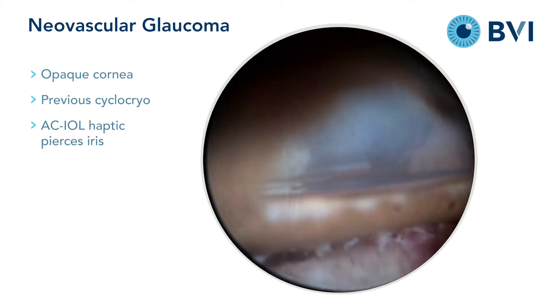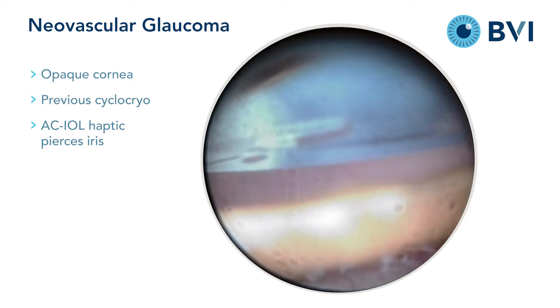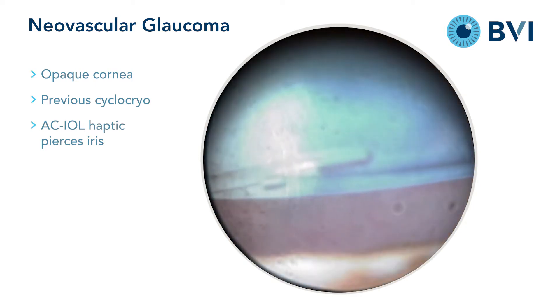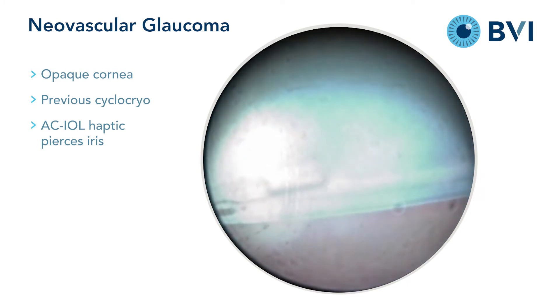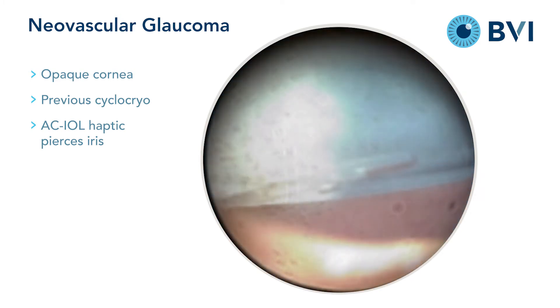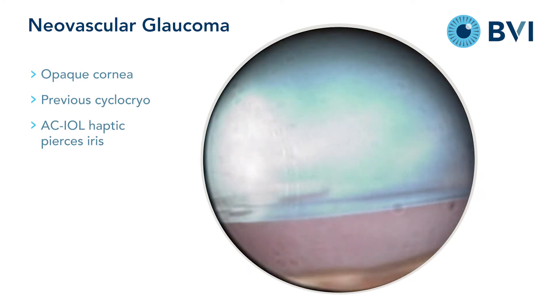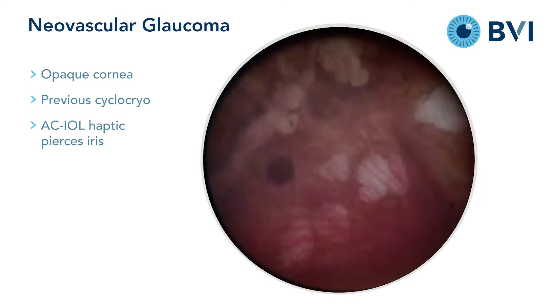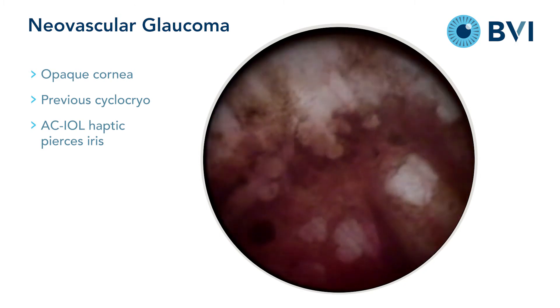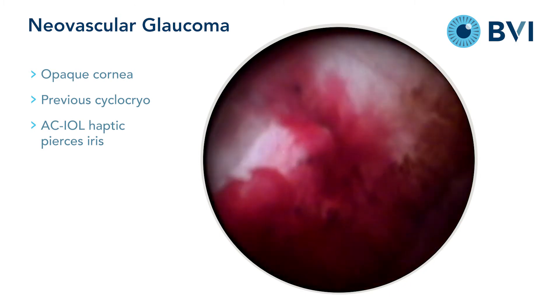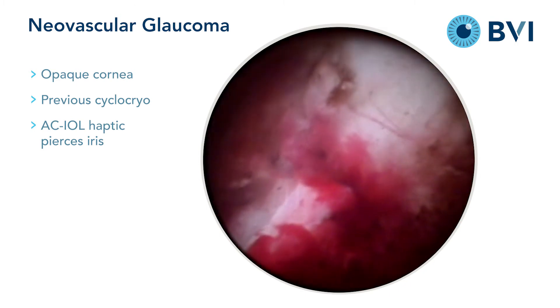A view through the pupil reveals the anterior chamber intraocular lens. Cobblestone degeneration is also noted in the peripheral retina.